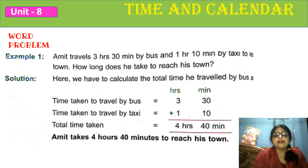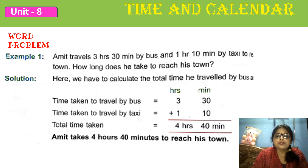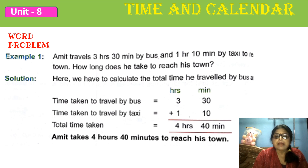Amit is traveling 3 hours 30 minutes by bus, which I have written here, and 1 hour 10 minutes by taxi. So first, write the statement: time taken to travel by bus is 3 hours 30 minutes; time taken to travel by taxi is 1 hour 10 minutes. Now you add both. The total time is 4 hours 40 minutes. So in the answers column, you write: Amit takes 4 hours 40 minutes to reach his town.